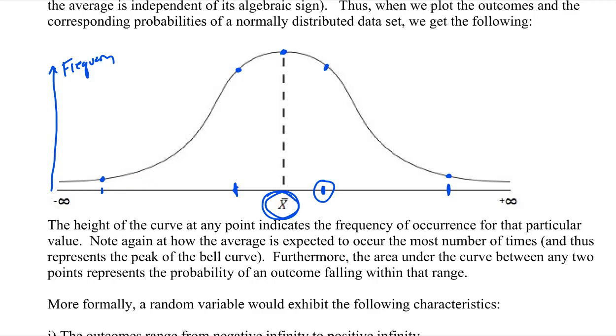So when you connect the dots, that's when you get that bell shape for normal distribution. So let's go back and continue with our analysis.